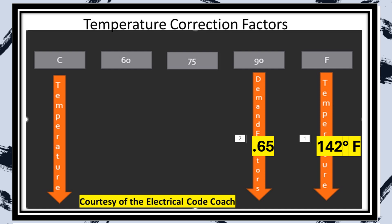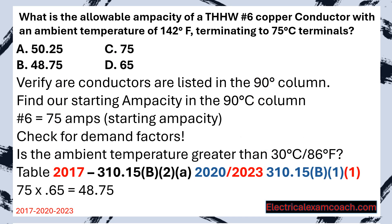We head to our respective temperature corrections table depending on our code cycle and find our correction factor. Start on the right-hand side because the question states Fahrenheit, go down to find the range for 142 degrees, slide over to the 90 degrees C column, and find the correction factor. We take our starting ampacity of 75 and multiply it by the correction factor, giving us a new allowable ampacity of 48.75 amps. Select B.